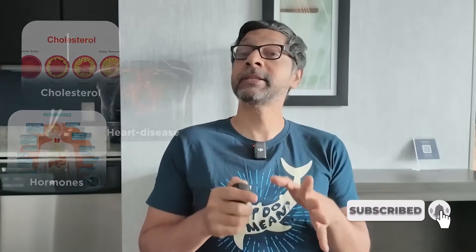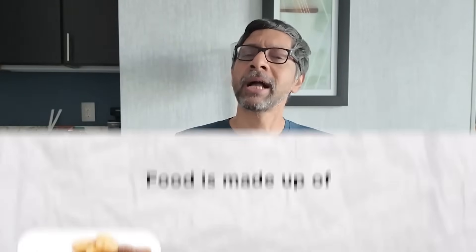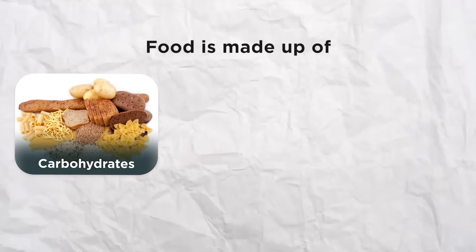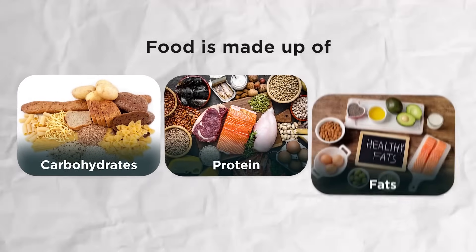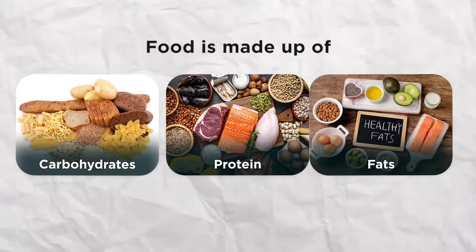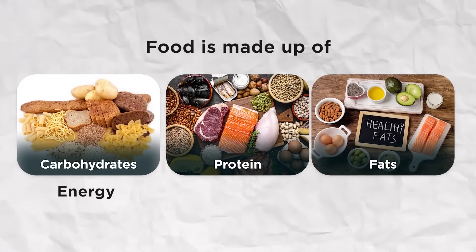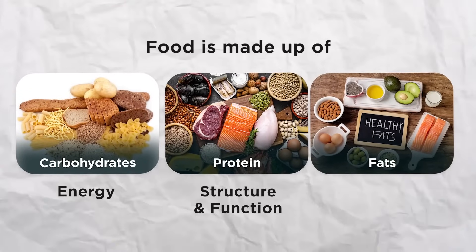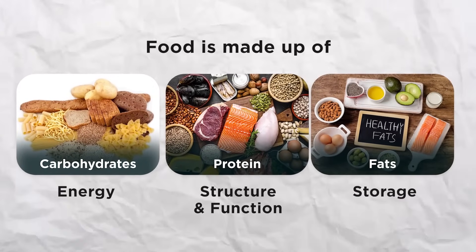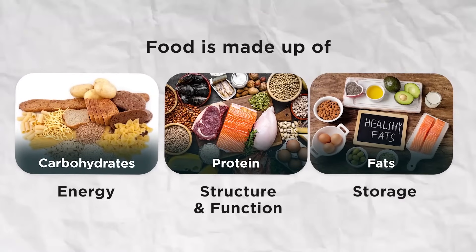Our food is made up of three macronutrients: carbohydrates, proteins and fats. If you had to quickly describe the primary function of each — carbohydrates are for energy, protein is for structure and function, and fats are for storage.